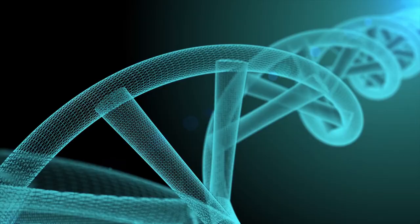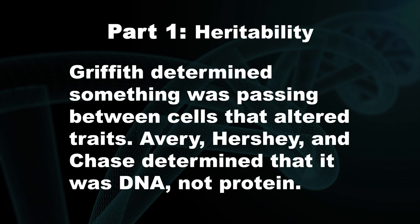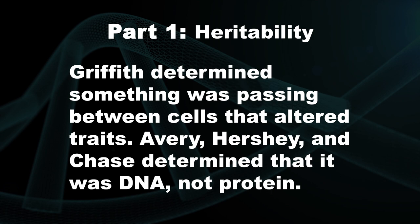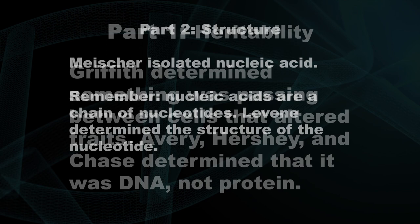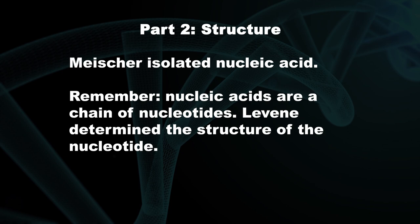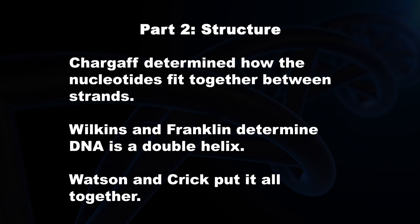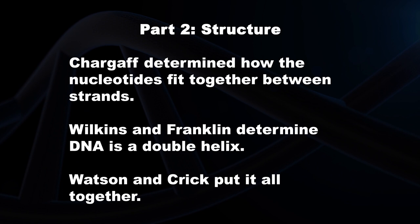Let's recap everyone's contributions in two categories: heritability and DNA structure. In heritability, Griffith determined that something was passing between cells that altered their traits, and Avery and Hershey and Chase discovered it was DNA that transferred traits from cell to cell. In DNA structure, Frederick Miescher isolated nucleic acid, Phoebus Levine determined the structure of the nucleotide, Chargaff determined how the nitrogenous bases fit together, Franklin and Wilkins captured Photo 51 depicting the double helix, and Watson and Crick finished by putting everything together and publishing the final structure. A hundred years and countless scientists to determine the structure of DNA — not bad for a phosphate, a sugar, and four nitrogenous bases.